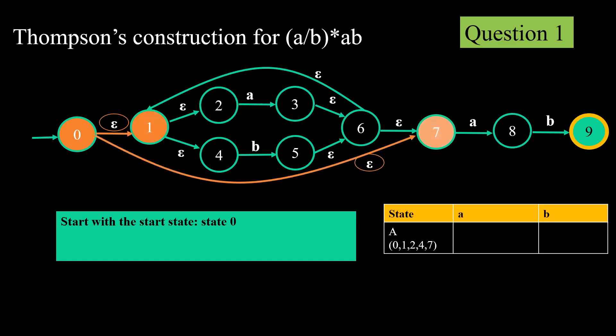From state zero we can go to two states on epsilon: one is state 1, another is state 7. From state 1 we can go to two states on epsilon: state 2 and state 4. We cannot go to any state from 2 or 4 on epsilon, and we cannot go to any state from 7 on epsilon. So our eClosure(0) set will contain zero itself, along with 1, 2, 4, and 7.